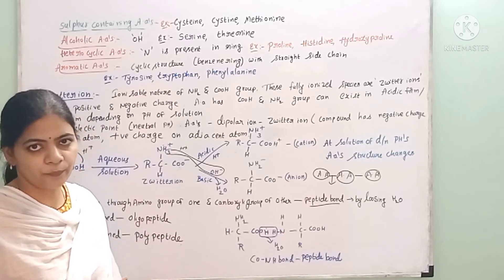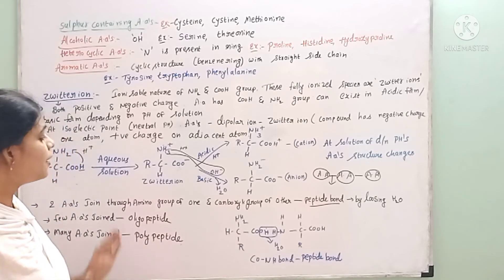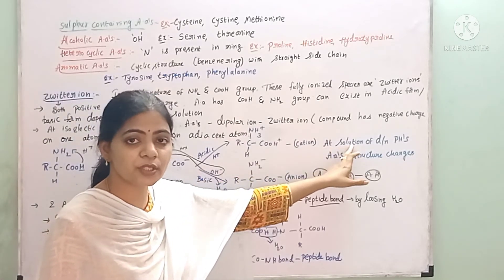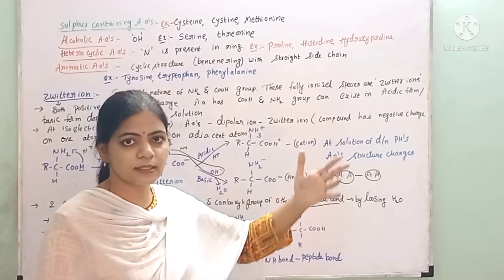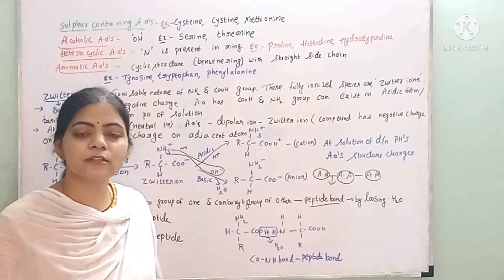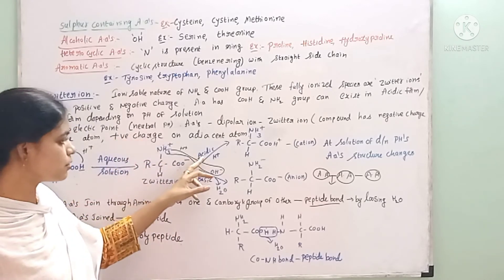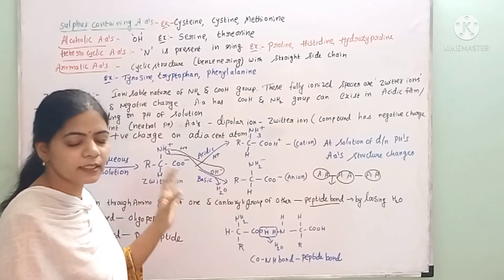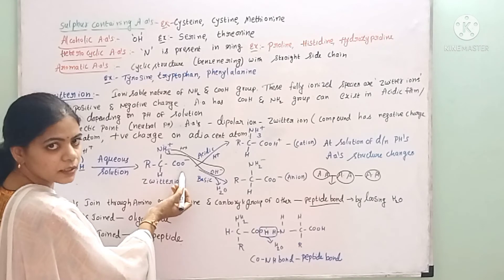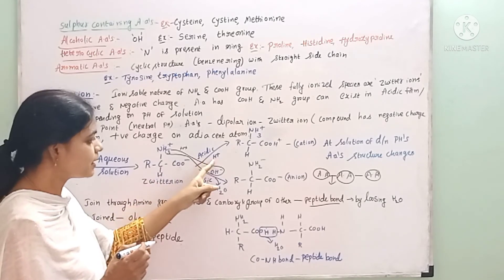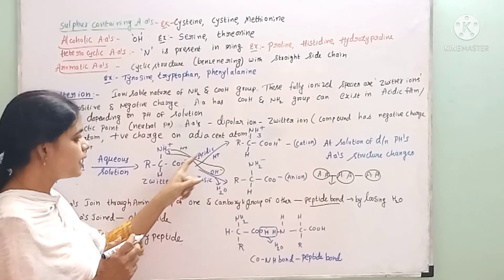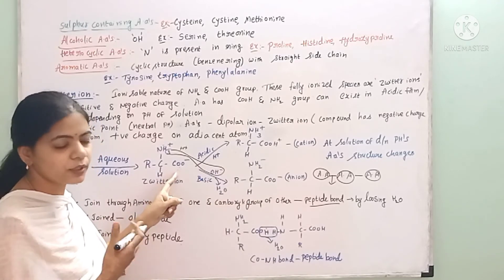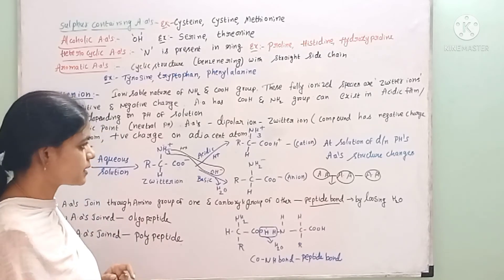The net charge of a zwitterion is zero. At neutral pH this zwitterion form occurs. When the amino acid is kept in acidic medium — which has H⁺ ions — the COO⁻ accepts one H⁺ and becomes COOH again. The amino acid thus gains a positive charge overall and becomes a cation.